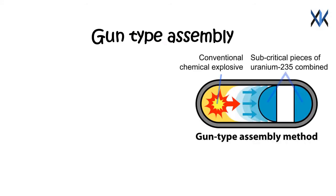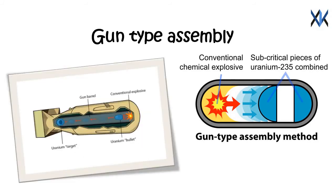Gun type fission weapons are fission-based nuclear weapons whose design assembles their fissile material into a supercritical mass by the use of the gun method, that is shooting one piece of subcritical material into another. Although this is sometimes pictured as two subcritical hemispheres driven together to make a supercritical sphere, typically a hollow projectile is shot onto a spike which fills the hole in its center.